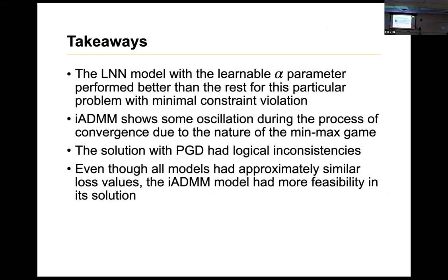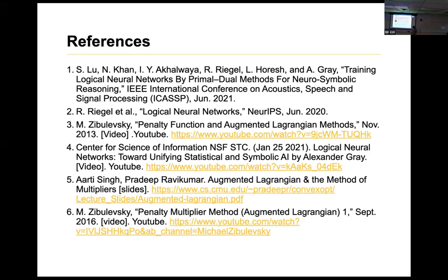The LNN model with the learnable alpha parameter performed better than the rest with minimal constraint violation. The minimal constraint violation is something that is more important for LNNs than getting a lower loss value. The iADMM shows some oscillations. In the previous lecture, we saw that the loss value oscillates. There was oscillation in this also. The solution with PGD had logical inconsistencies. That is what we saw. And even though all models had approximately similar loss values, the iADMM model had more feasibility in itself and less logical inconsistencies. That's all from us.